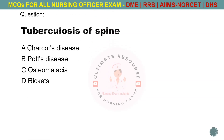Tuberculosis of the spine. Options are A. Charcot's disease, B. Pott's disease, C. Osteomalacia, D. Rickets. The answer is B. Pott's disease.